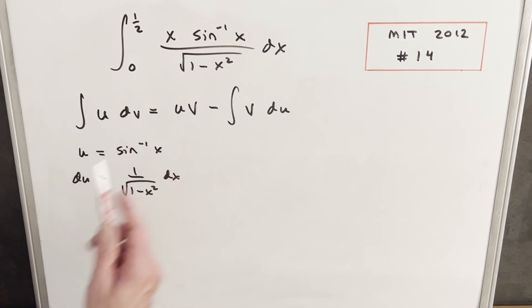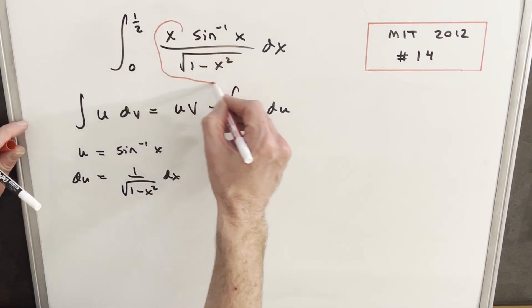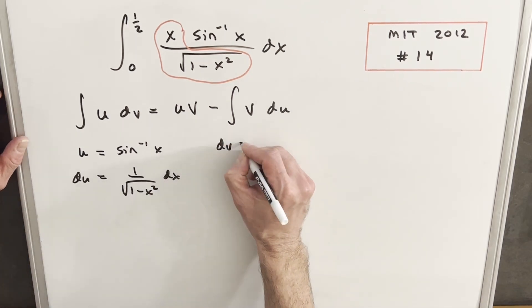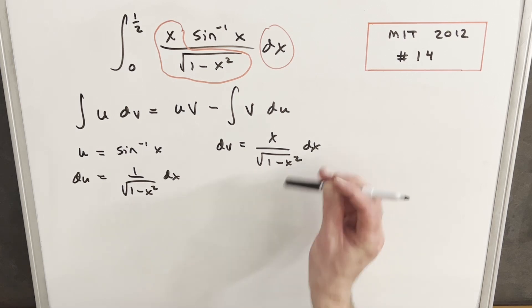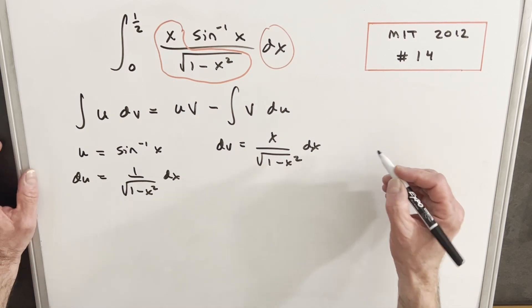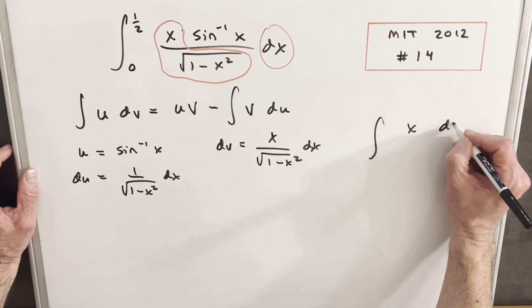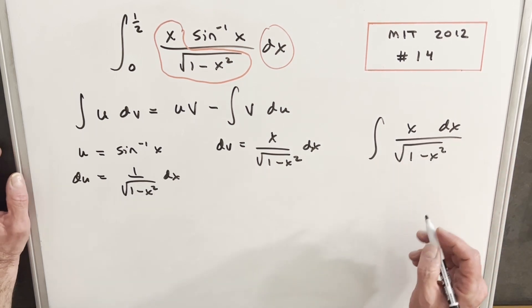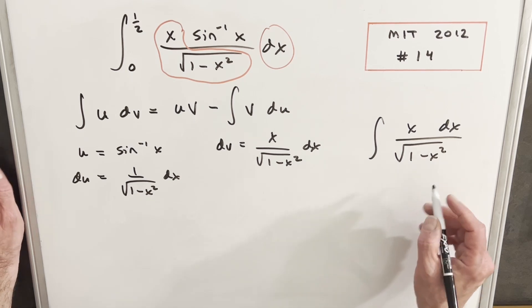Then what is this dv value going to be? Well, it's everything else, because we chose sine inverse for our u, so we'll choose the rest of it for our dv. If everything else is our dv, we just need to integrate this thing. We'll have x dx over square root of 1 minus x squared, and this is set up pretty nice for a substitution.